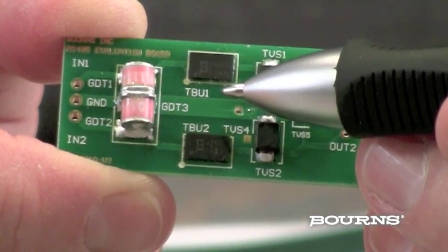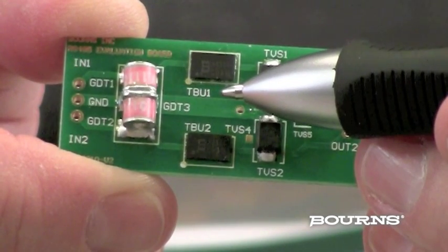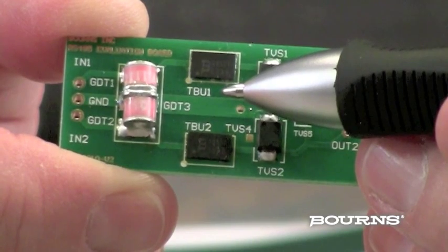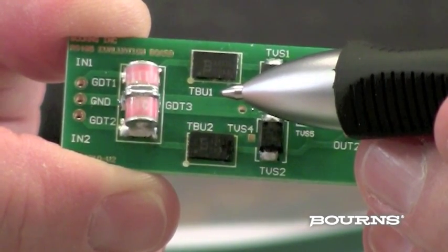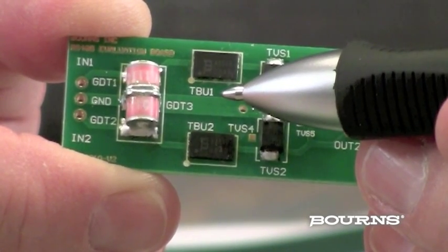In this case, the TBU current limit is 200 milliamps per RS-485 specifications. Once the transient has passed, the TBU resets and circuit operation begins again.